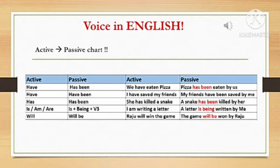The next one is is, am, or are. By passive conversion the form is: is plus being plus verb three — the past participle. For example: I am writing a letter. By passive conversion: A letter is being written by me.